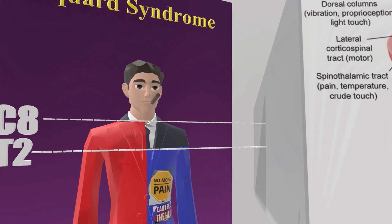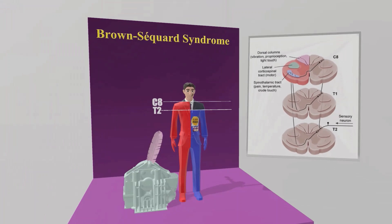Thus, this person will have continued pain and temperature sensation in that area. So just to review: in Brown-Séquard syndrome, there will be ipsilateral loss of vibration, proprioception, and motor function below the level of the lesion — in this example at C8 and below. There will also be contralateral loss of pain and temperature sensation, as well as crude touch, on the contralateral side.